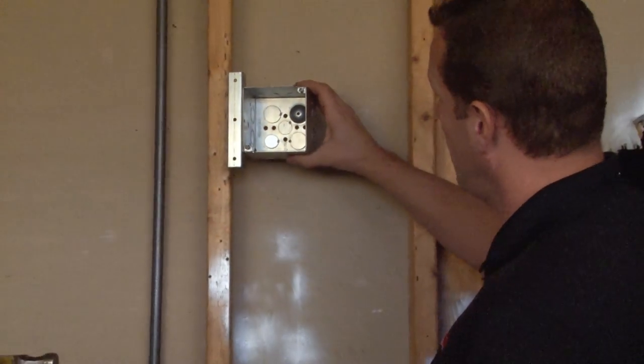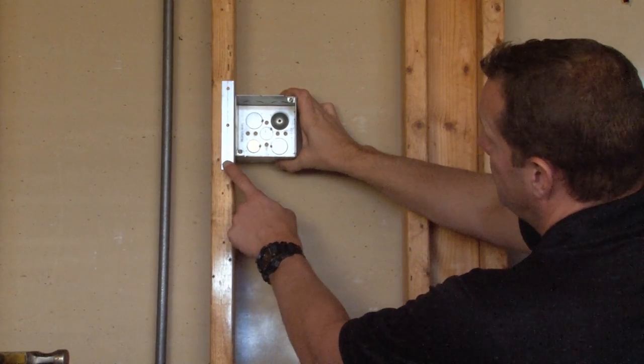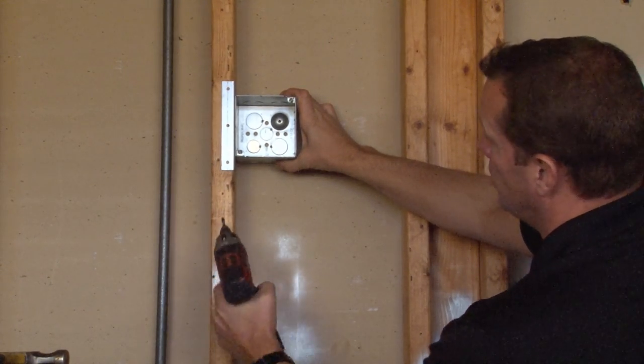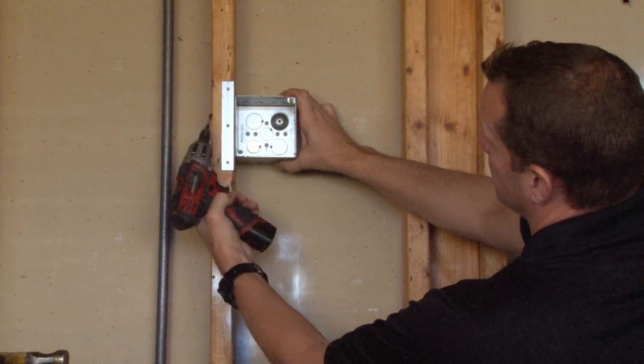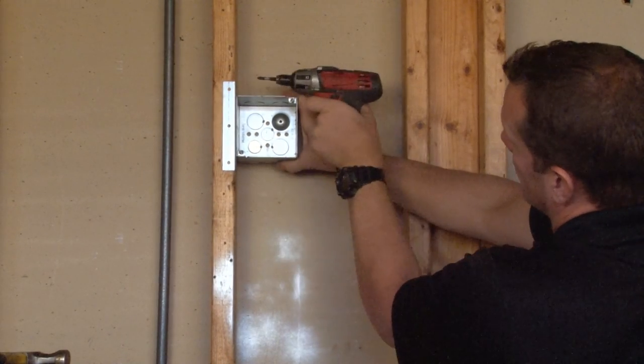You simply raise the box up, place the bracket on the face of the stud, and then you can quickly and easily secure it using screws to the face of the stud or perpendicularly directly into the stud.